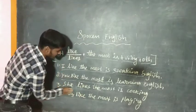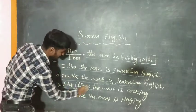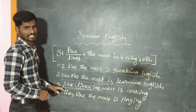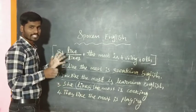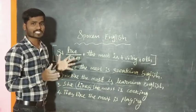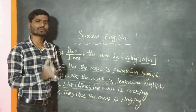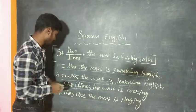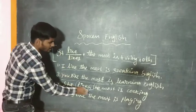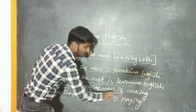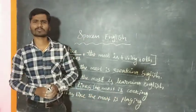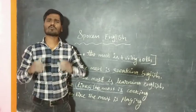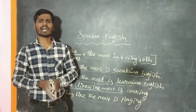She likes — because she is a third person singular. When he, she, or it comes, you have to write likes. She likes the most is cooking.